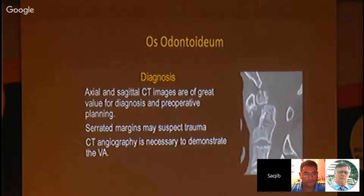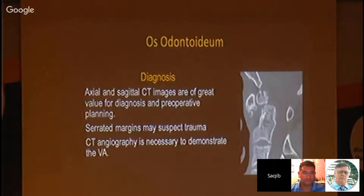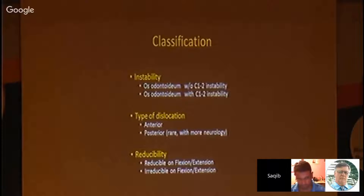Axial and CT images are of great value for diagnosis and planning. If there are serrated margins, we can suspect trauma. There are different classifications, but what is important is whether there is instability. In some cases there is no apparent mobility.